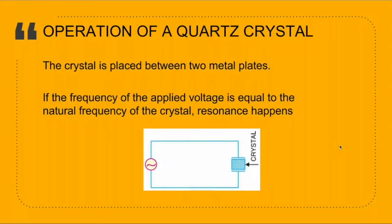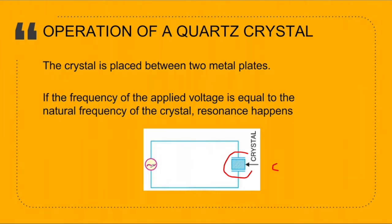How do quartz crystals operate? We can incorporate the crystal oscillator in an electrical circuit by placing it between two metal plates. This component acts like a capacitor, with the crystal itself serving as the dielectric. If we introduce an AC voltage across the plates, the crystal will start vibrating at the frequency of the applied voltage.